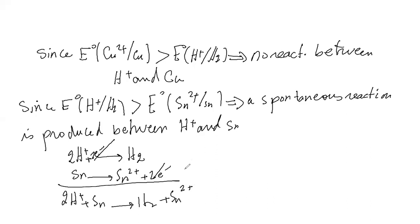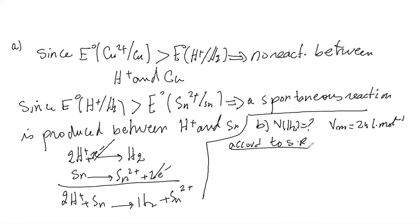This is part A. Part B: What is the volume of hydrogen evolved? V of H2, given VM = 24 liter times mole minus 1. According to stoichiometry...